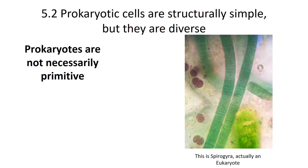I didn't spend a lot of time going over the structure of a bacteria cell. What I'm really more interested in talking about is why we don't consider them to be primitive, even though they're simple compared to a eukaryotic cell. The reason why they're not necessarily primitive is because they're incredibly diverse, and the reason why is bacteria evolve rapidly. When you think about a generation time of 20 minutes, that's fast.